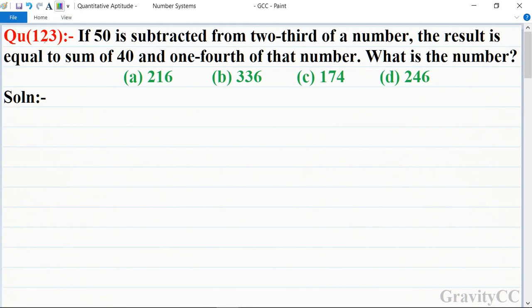Quantitative aptitude chapter number system question number 123: If 50 is subtracted from two-third of a number, the result is equal to sum of 40 and one-fourth of the number. So what is the number? First of all, we let